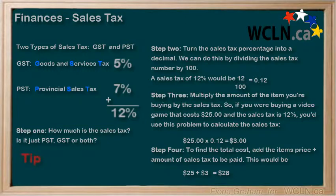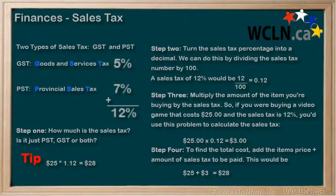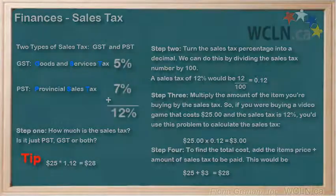Here's a great tip. The faster way to calculate the total is to multiply the cost by 1.12 in our previous example. So, $25 times 1.12 equals $28. This gives you your total cost with the tax included in one step.